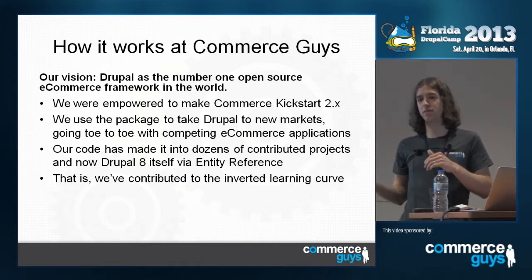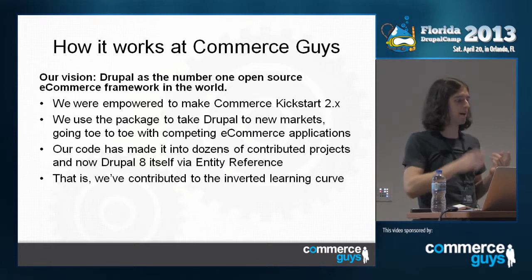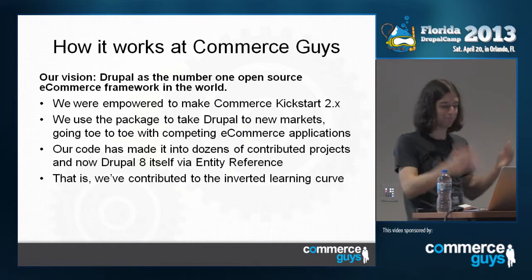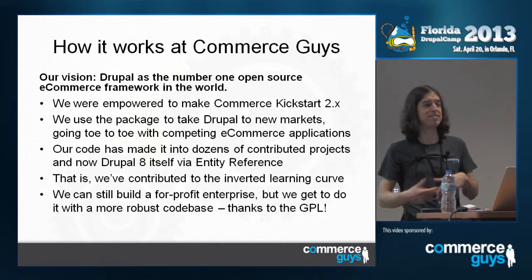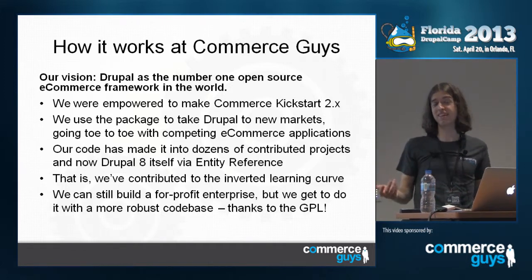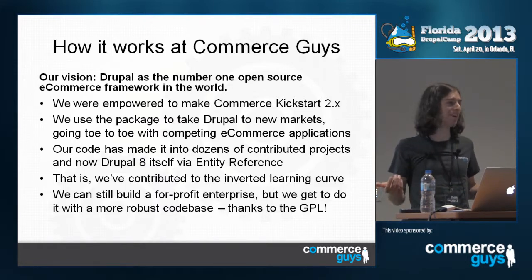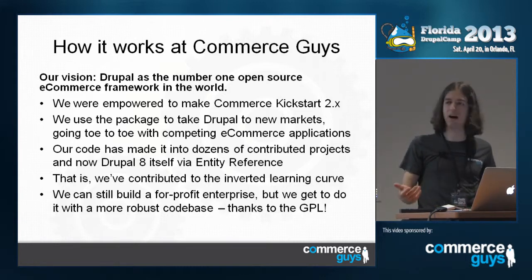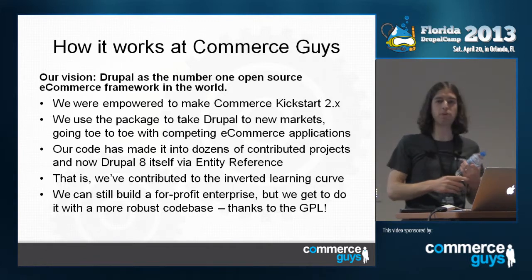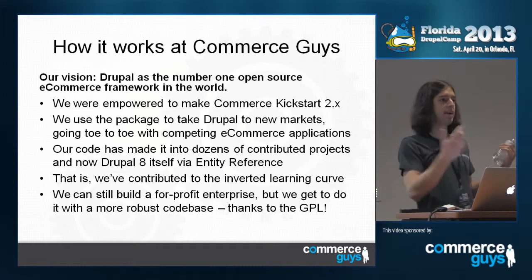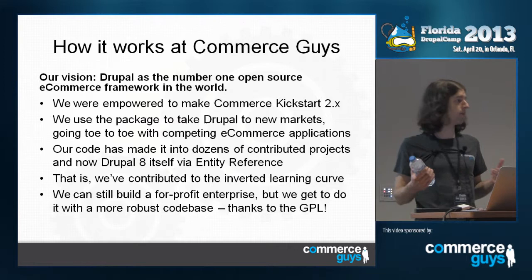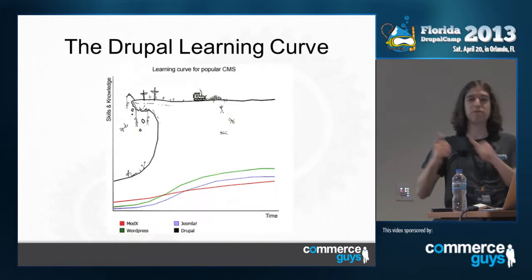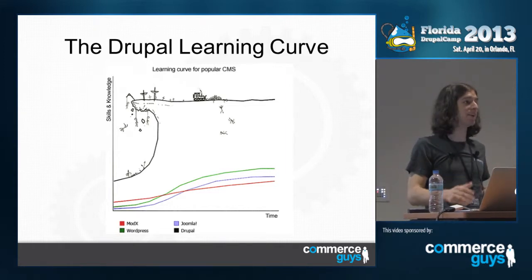I'm going to remove thousands of lines of code in Drupal Commerce when we port to Drupal 8 because I don't have to define a product reference field and a customer profile reference field any longer, and those reference fields are going to be more powerful in Drupal 8 than they are right now. So it's working. You can still build a for-profit enterprise — the GPL doesn't prevent you from making money. This just works. It means we've embraced the inverted learning curve, but the GPL let us do that and we all get to benefit from it. I know it's working at Commerce Guys, at Acquia, at Media Current — otherwise they wouldn't afford to be platinum sponsors of Florida Drupal Camp. This works in basically any Drupal shop out there, and I think it's great.